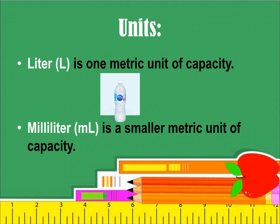Milliliter — we can use the symbol mL — is a smaller metric unit of capacity. It could be drops of water. So a milliliter is smaller than a liter.